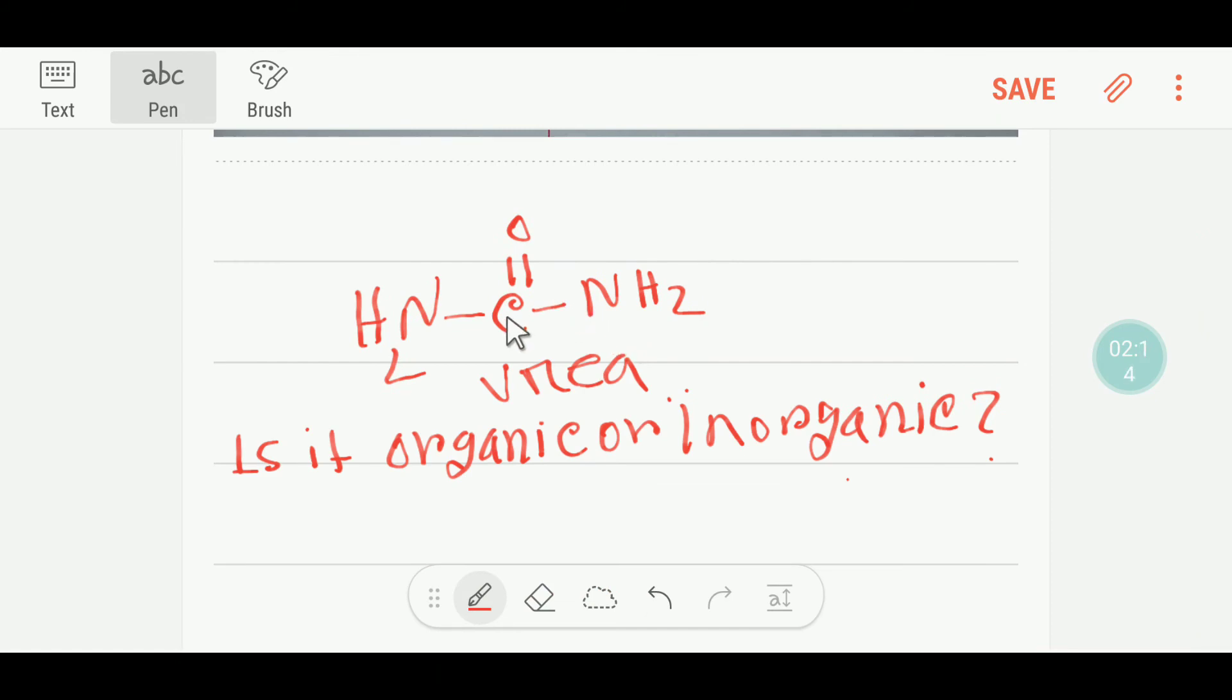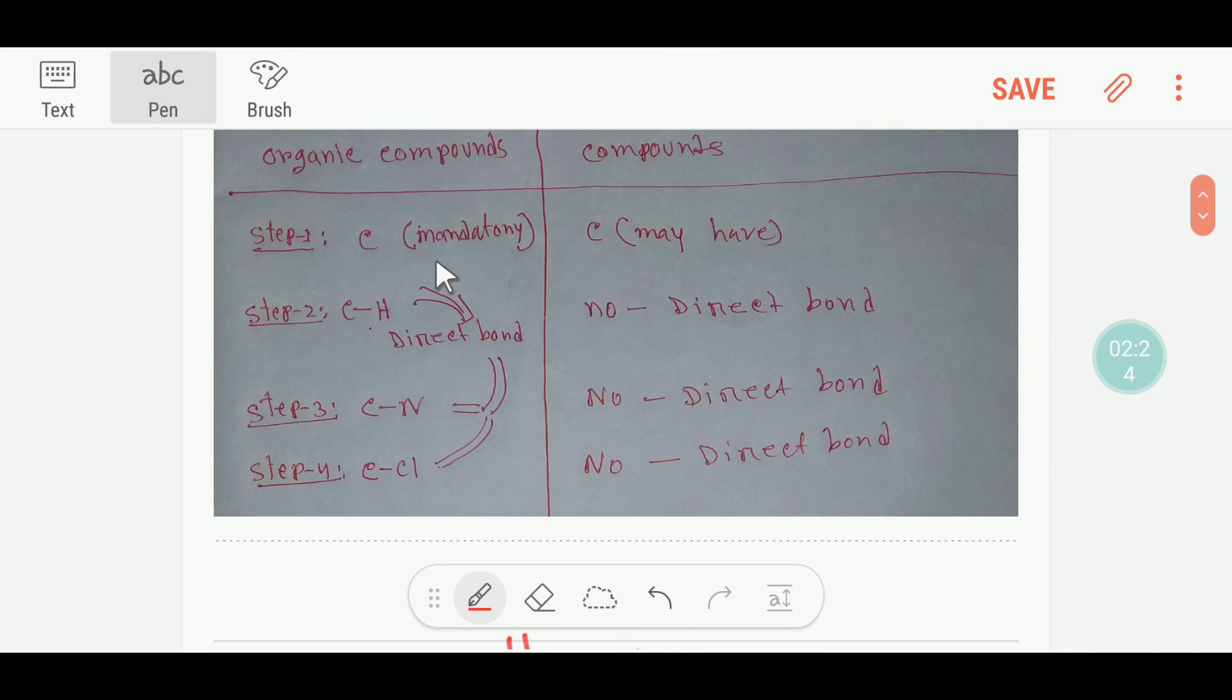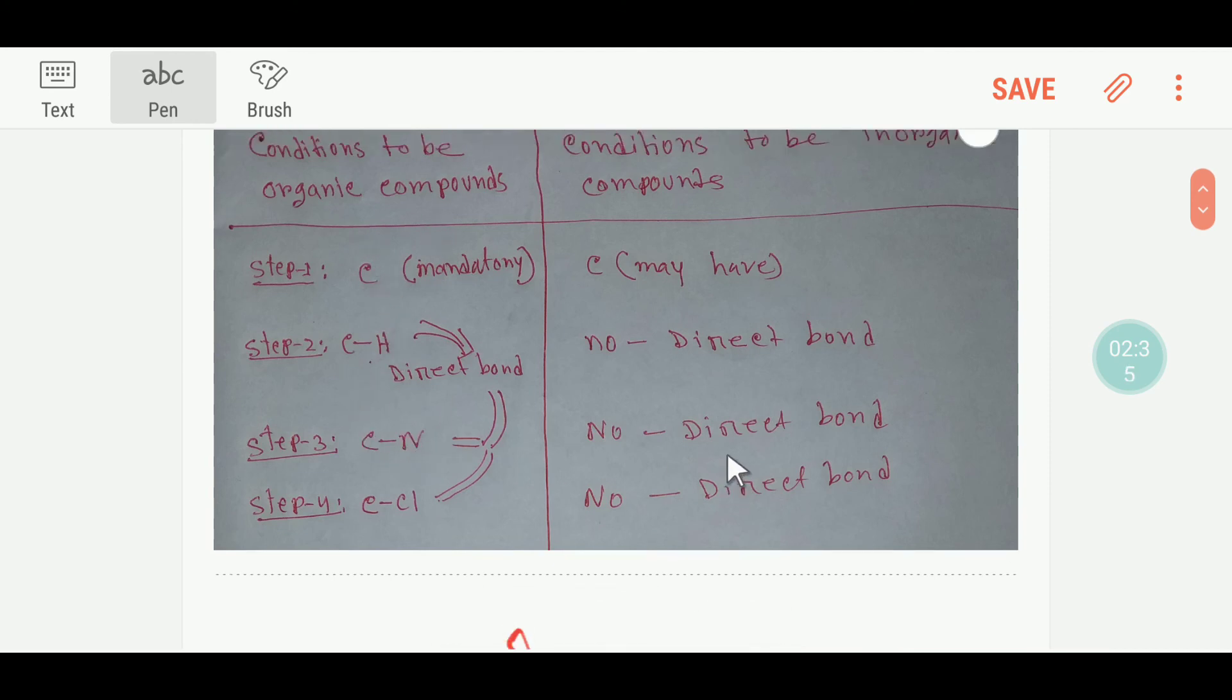We are not able to determine yet. Now I will look at the carbon-nitrogen bond. In case of organic compounds, we have carbon-nitrogen bonds, but in case of inorganic compounds, we don't have any carbon-nitrogen bond.